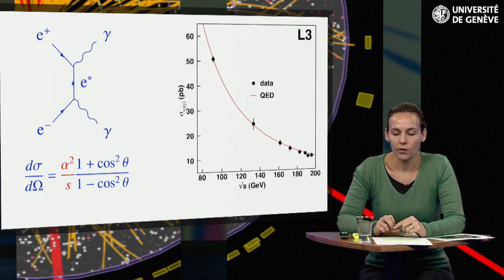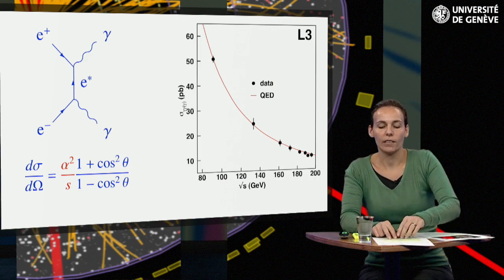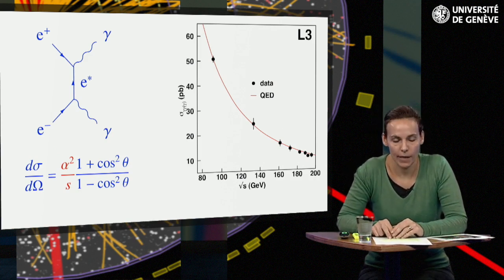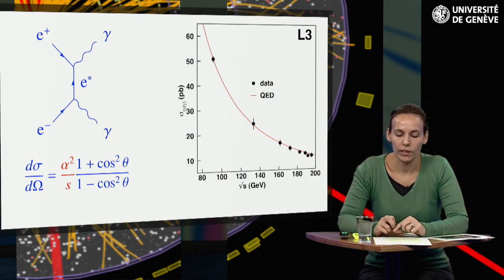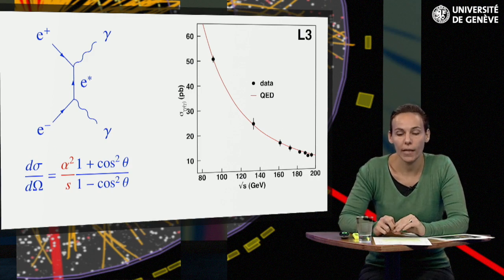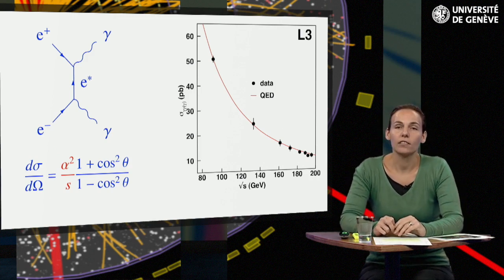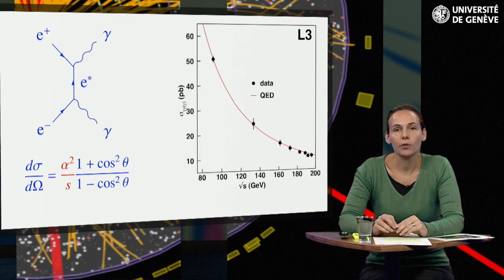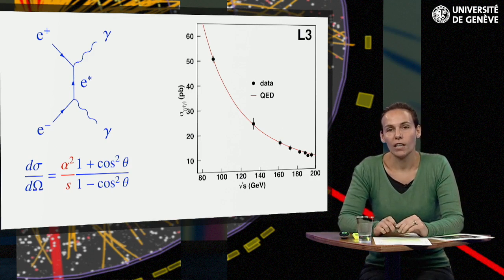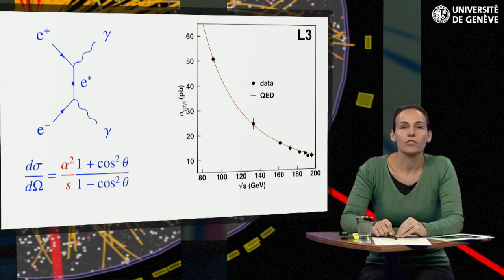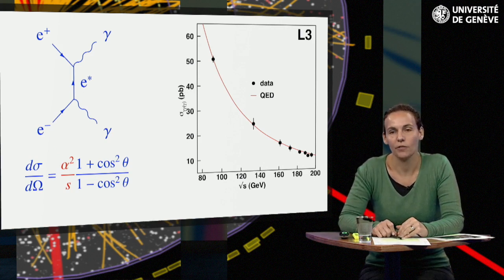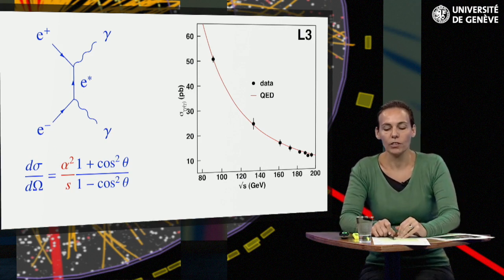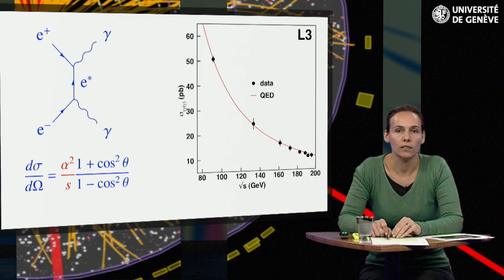It is obvious that the angular distribution is symmetric under theta going to theta plus pi. The factor 1 minus cos theta square in the denominator can come as a surprise, because it makes the cross-section diverge when the scattering angle approaches 0 or 180 degrees. Such a divergence is not admissible. The cross-section that represents a probability must always respect the upper limit of unitarity, corresponding to a probability of 1 for the process.